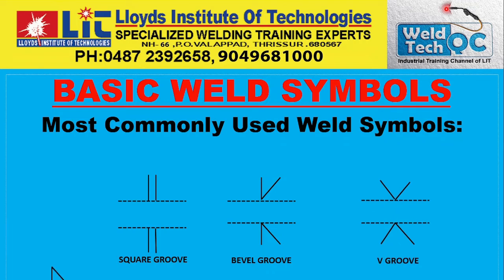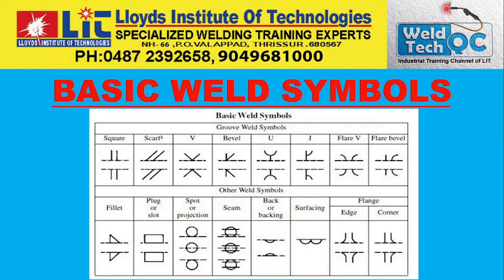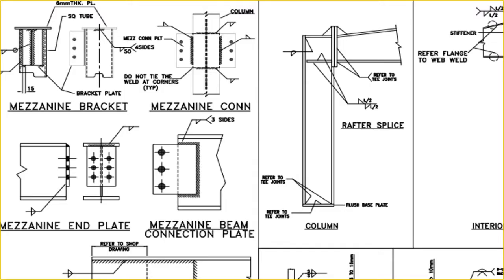These are the most commonly used Weld symbols we went through last time, and these are the other basic Weld symbols — the Fillet symbol, V-Groove symbol. These are Groove Weld symbols and other Weld symbols including Fillet Weld, Plug or Slot, Spot Weld, Seam Weld, Back or Backing Weld, and Surfacing Weld.